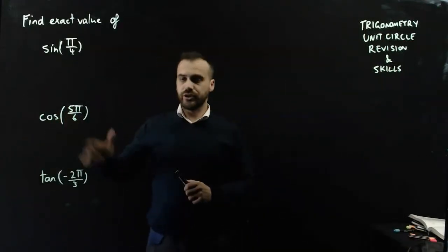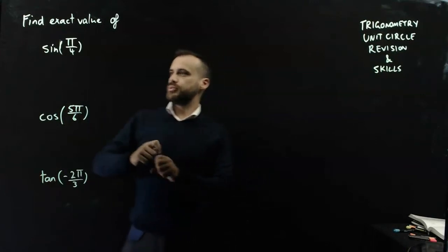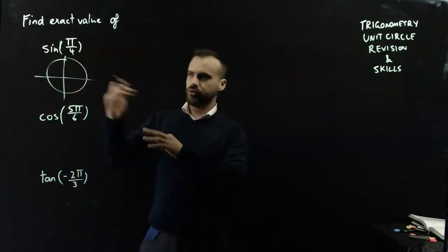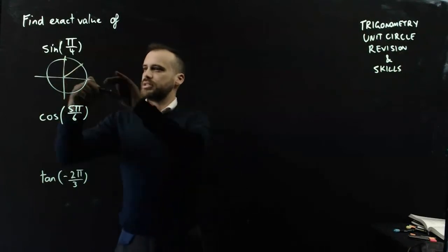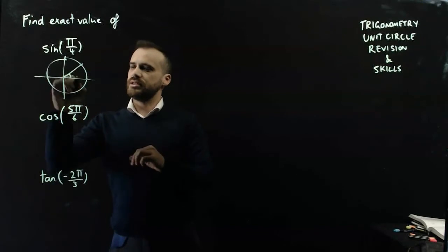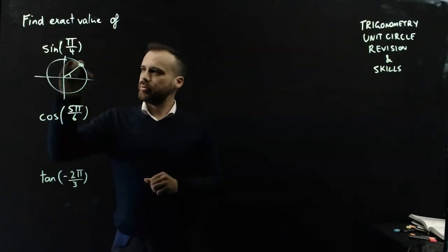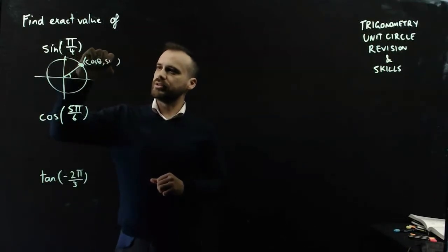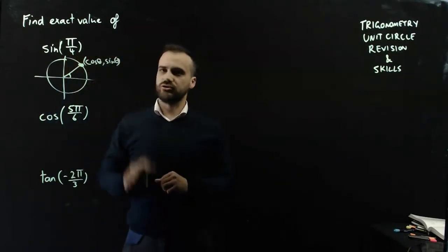So finding exact values of trig ratios, I'll just do this first one here, sin π on 4. On the unit circle, π on 4 is 45 degrees. So start from the positive direction of the x-axis, move around. This is the angle I'm worried about. I'm looking for the y-coordinate of that dot that I've just drawn in.